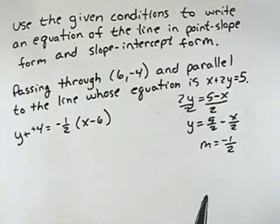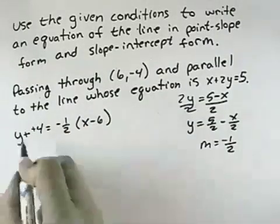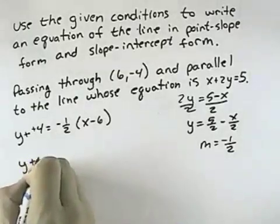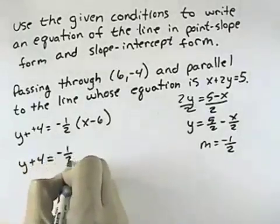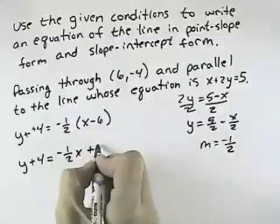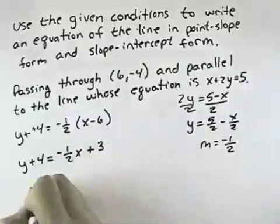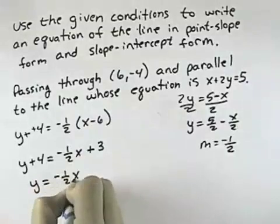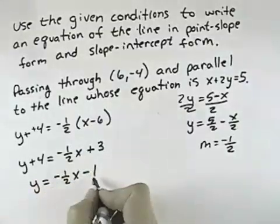And so that's the equation in point-slope form. To get slope-intercept form, I want to solve for y. So first, I'll multiply out the right-hand side to get -1/2 x plus negative times negative is positive. 1/2 times 6 is 3. And now, subtracting 4 from both sides, I get -1/2 x - 1.